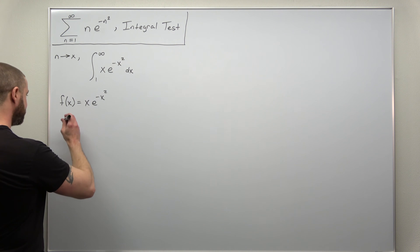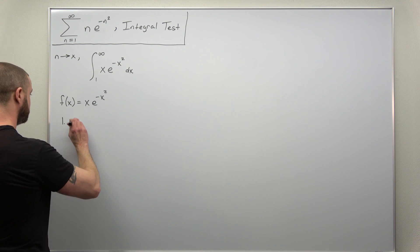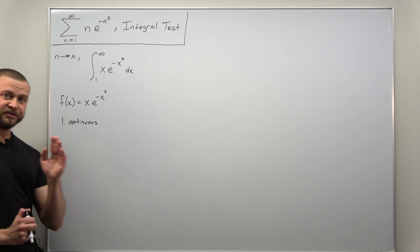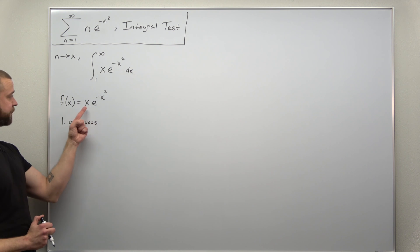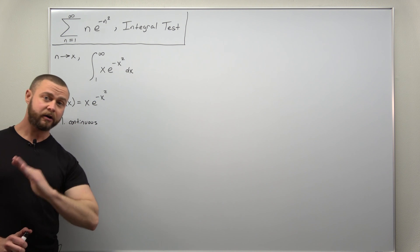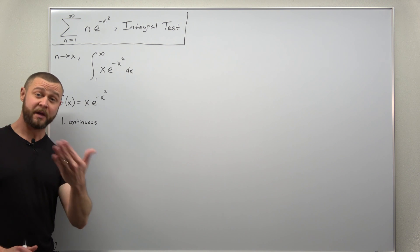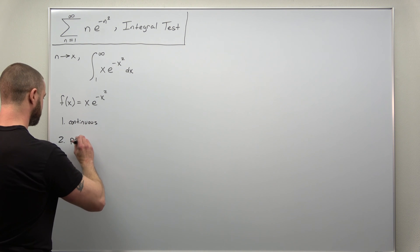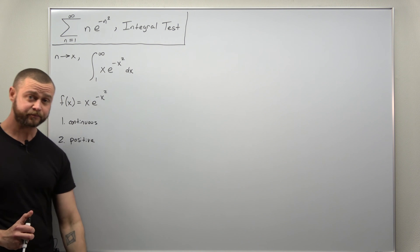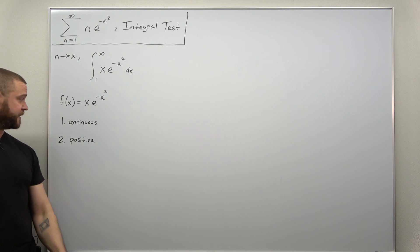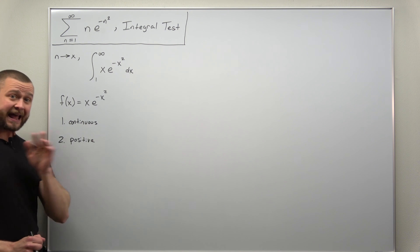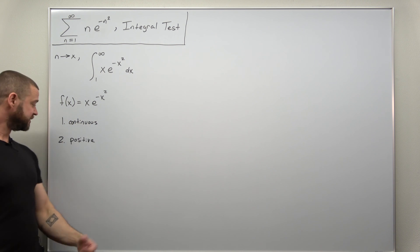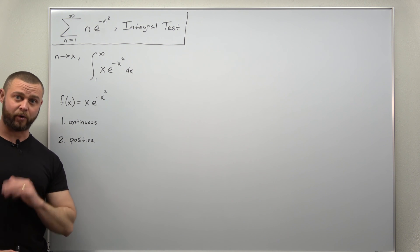Always check your three conditions and verify them. First, this function is continuous because it's built out of a combination of continuous functions — x, the exponential function, and x squared — so this combination of products and composites is continuous. The next condition is that the function must be positive. On our interval from 1 to infinity, x is always positive and exponential functions are always positive, so the whole function is positive on that interval.